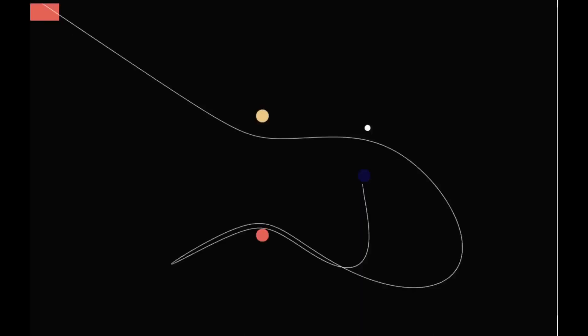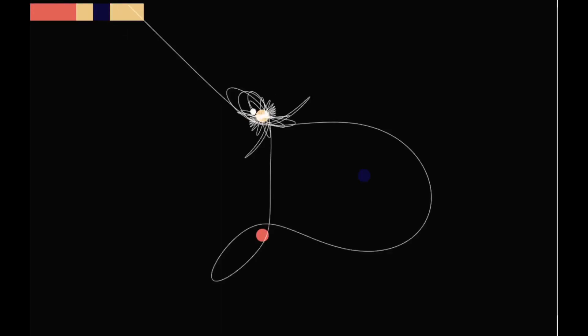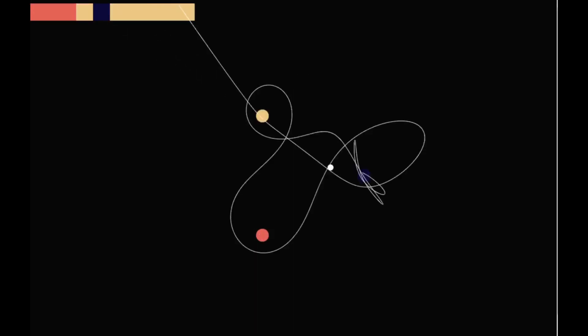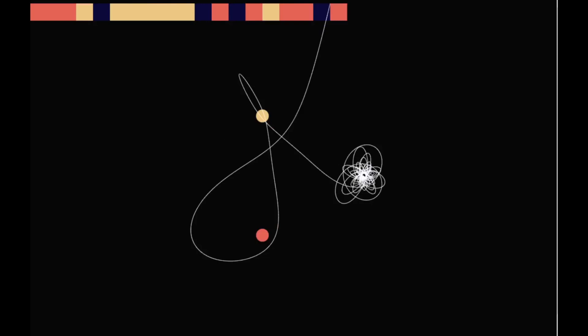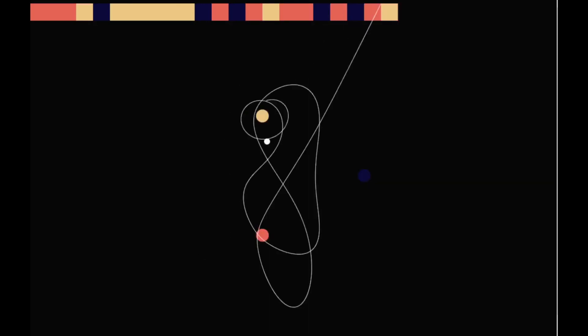Another way to understand the dynamics at play is by coloring each point by which magnet it lands on. Each magnet is given a different color. Then, from each point on the screen, the pendulum simulation is run for a certain amount of time. The original point is then given the color of the magnet the bob is closest to, often times the one it lands on.